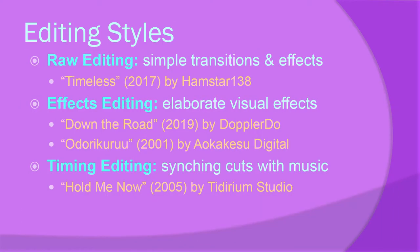From what I have seen as the Toricon AMV contest coordinator, raw editing isn't really used that much anymore. Raw editing refers to just very simple transition effects — mostly just making plain cuts between different video sources without too much fancy stuff. But special effects have gotten more sophisticated and easier to implement over time, so more people can use them even as a beginner editor. Raw editing is still an effective way to make an AMV though. The AMV Timeless by Hamstar138, for example, won an award at Anime Boston when it premiered, despite having fairly straightforward editing with only a few special effects.